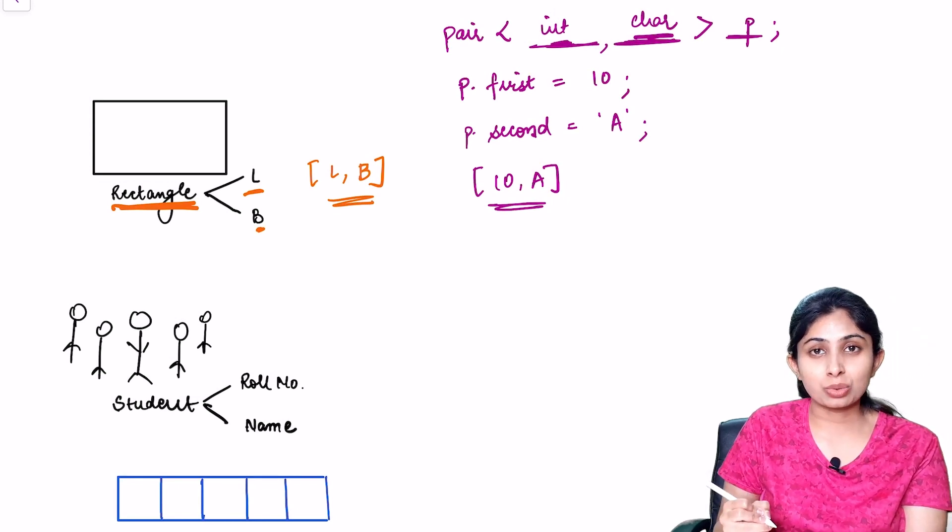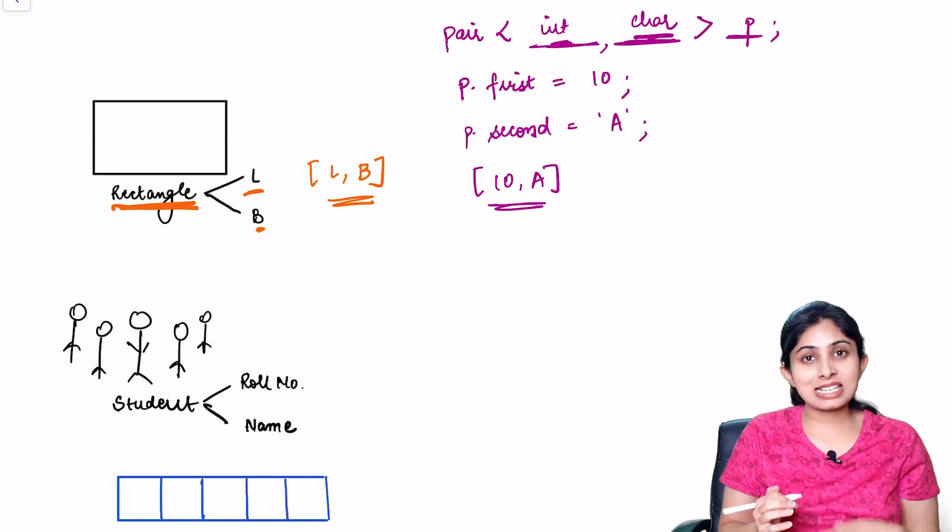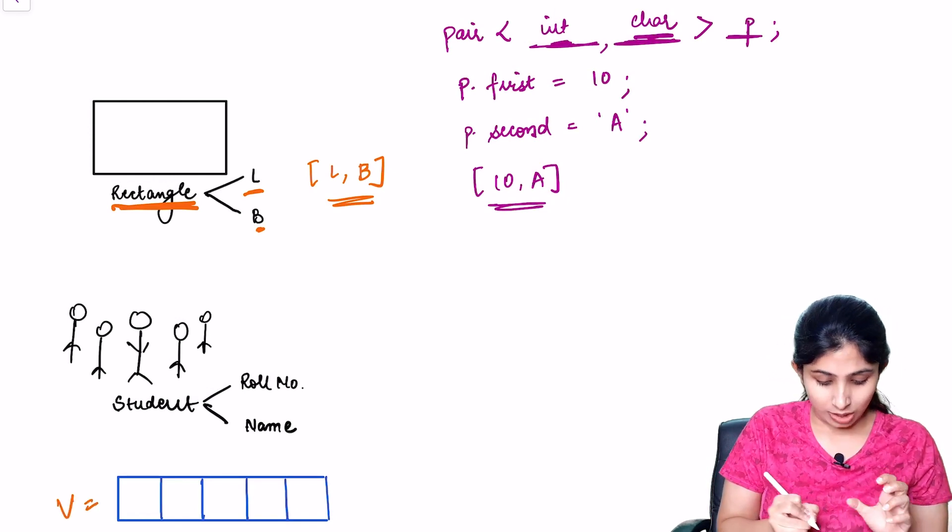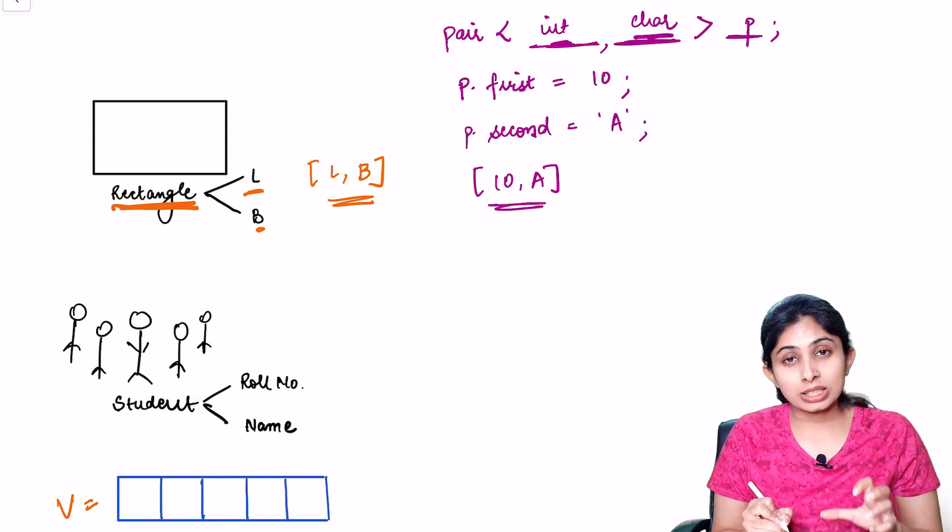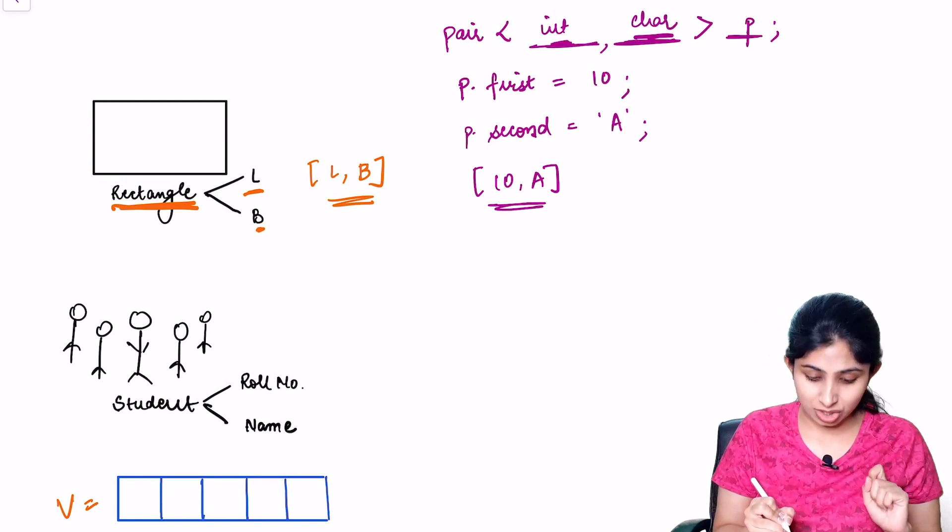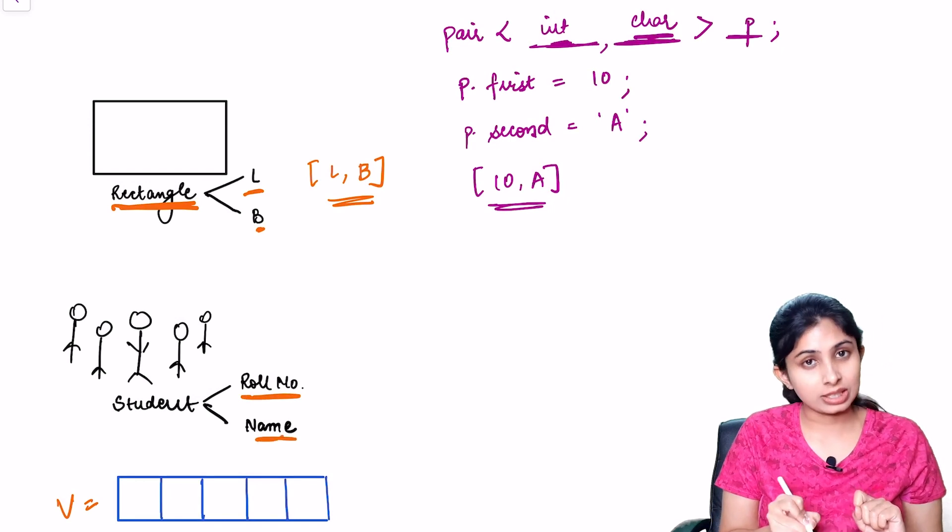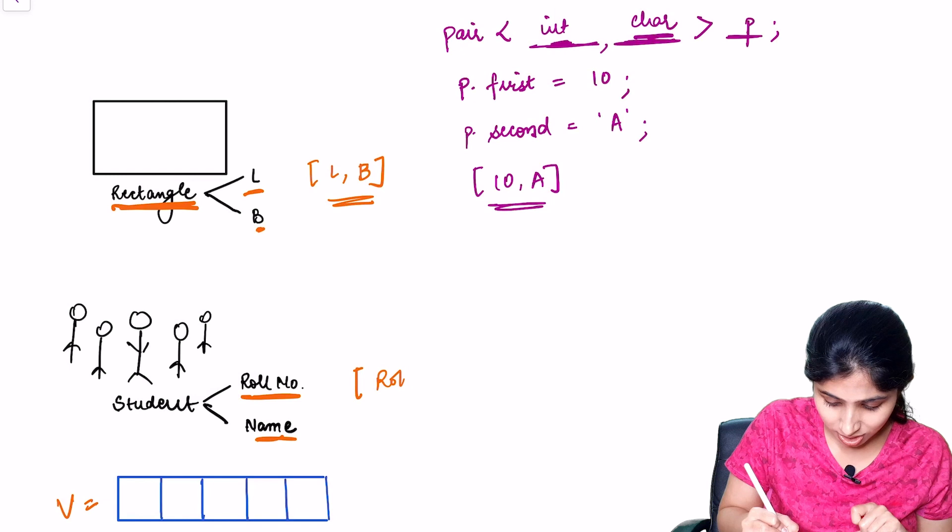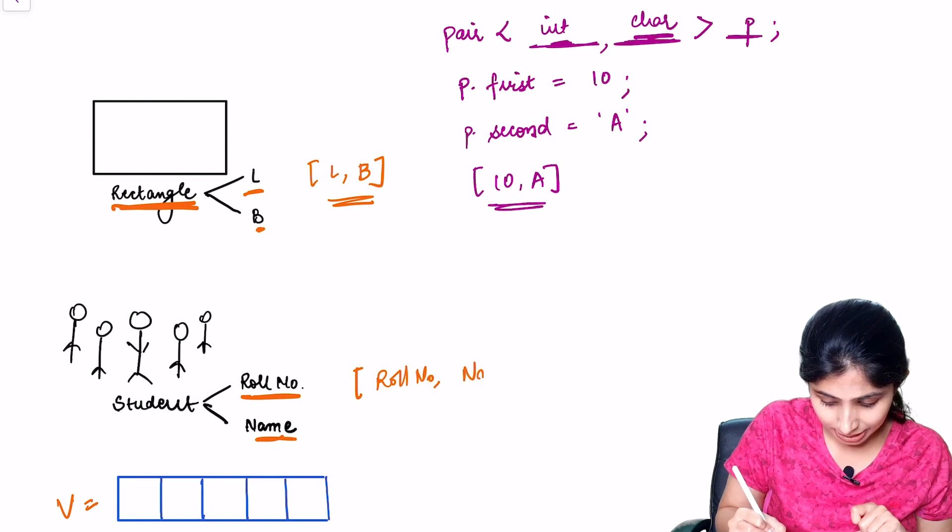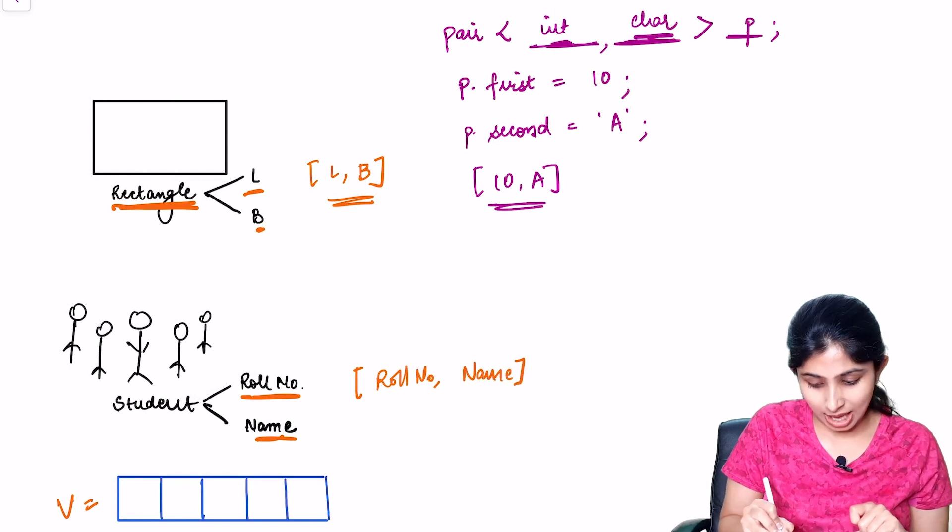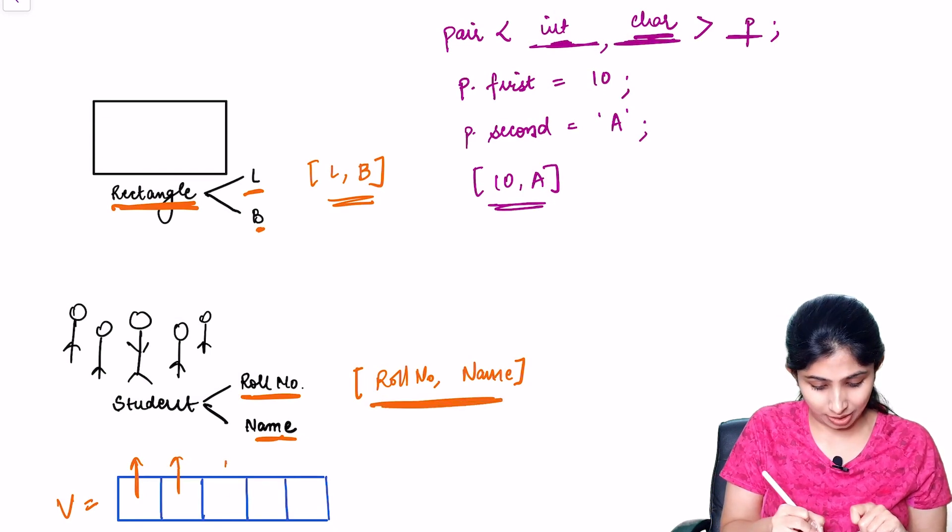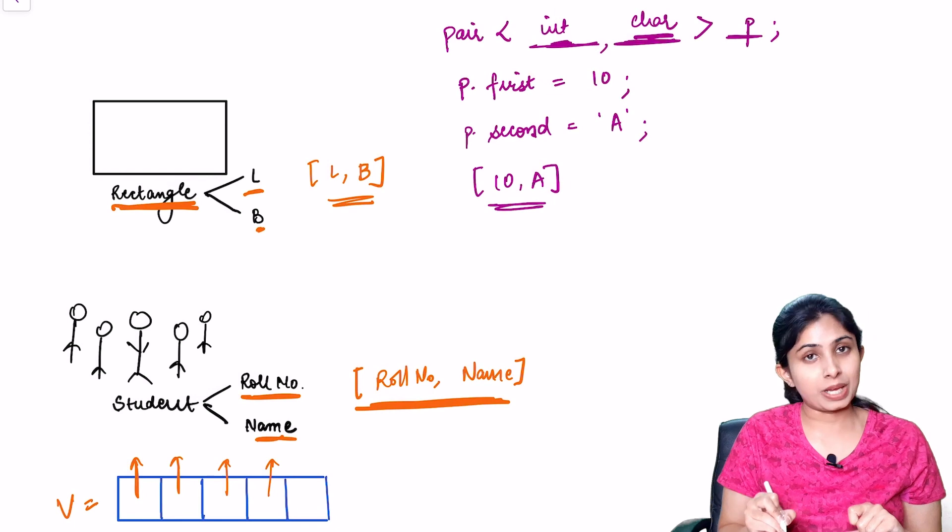Let's understand this through a different example. Let's assume a scenario wherein you need to create a vector where you need to store the data of different students and each student has a role number and a name. So you can create a pair which has role number and name and each node of this vector can be the pair.